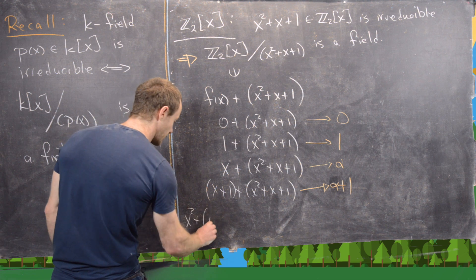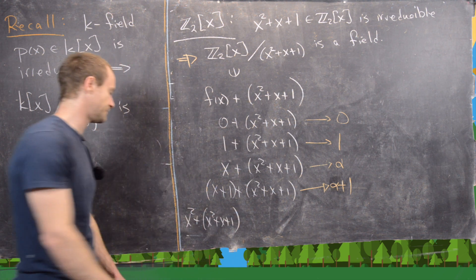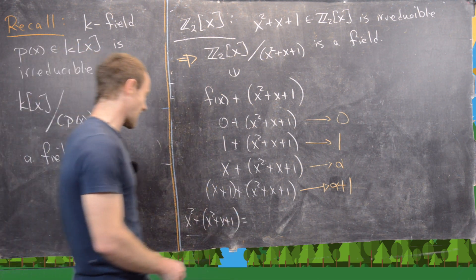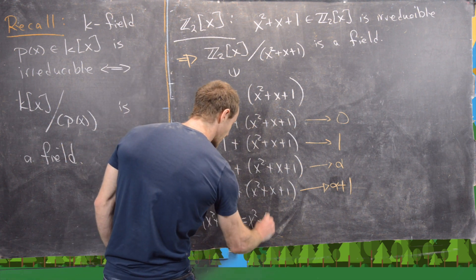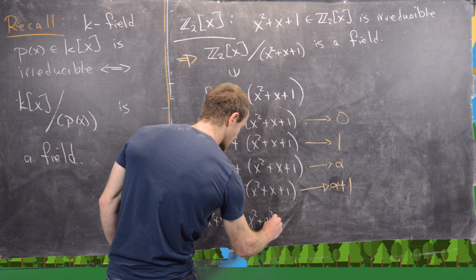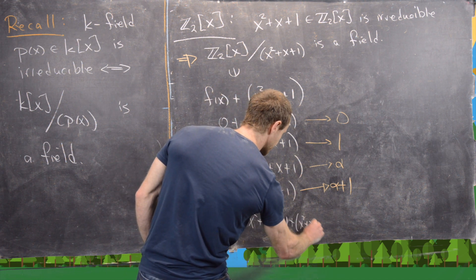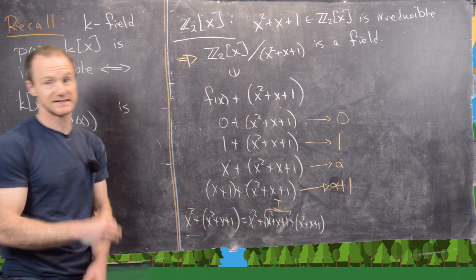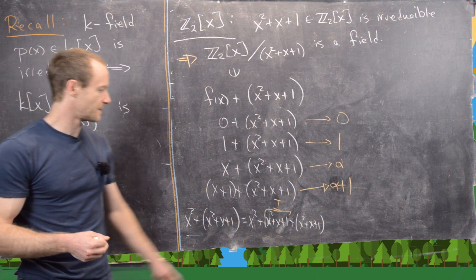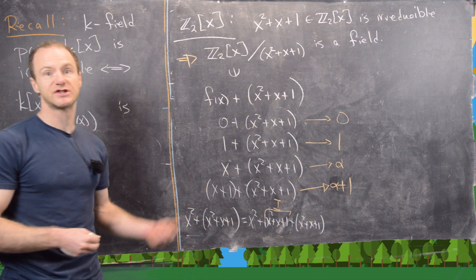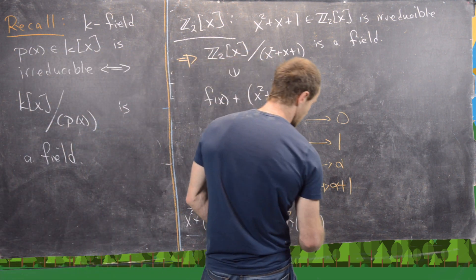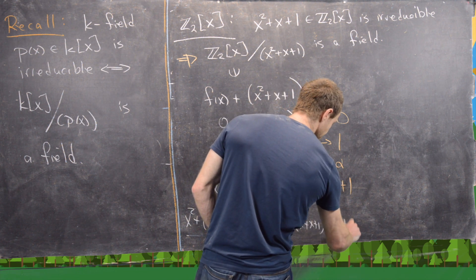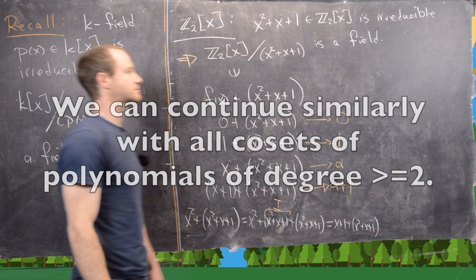Higher powers of x are not needed. For example, x² + (x²+x+1): we can rewrite x² as x² + (x²+x+1) + (x²+x+1). Since x²+x+1 is in the ideal, it equals 0 in the quotient ring. Then x²+x² = 2x² = 0, so this reduces to x+1 + (x²+x+1). So x² reduces to x+1 in this ring.